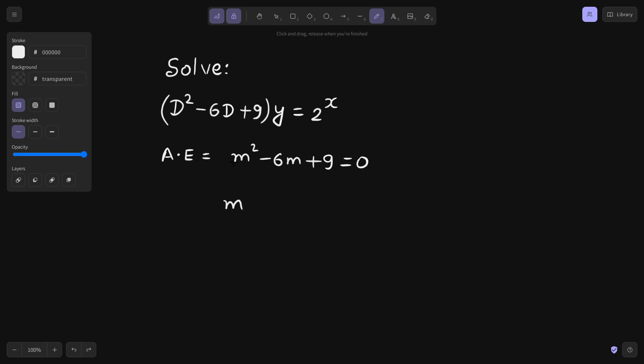This is nothing but m minus 3 whole square equals to 0. This is giving you 2 repeated roots which are 3.